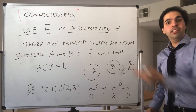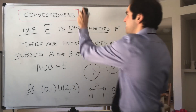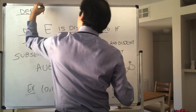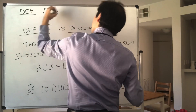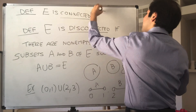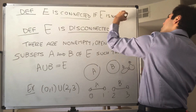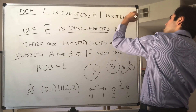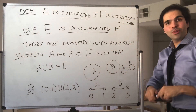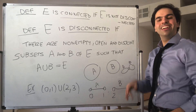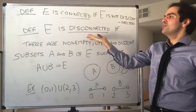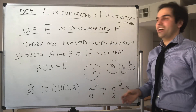And what would connected mean? It just means it's not disconnected. So definition: E is connected if E is not disconnected. And in particular, it's very important to understand that proofs that something is connected usually go by contradiction, because you assume it's disconnected and then you find something weird happening.